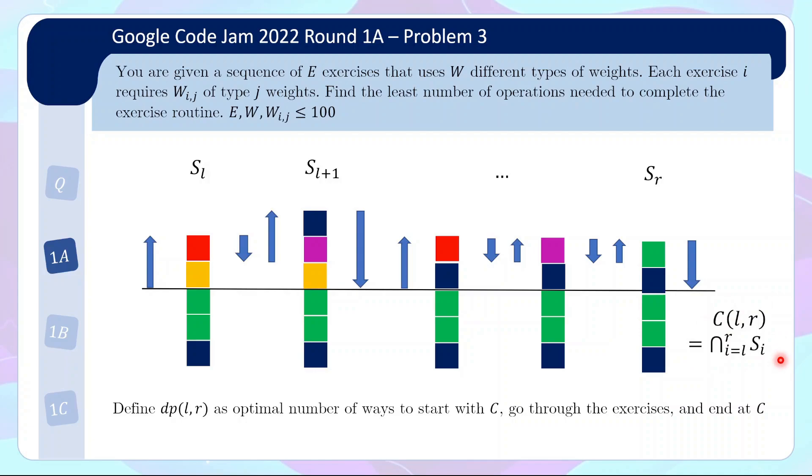Now the next part is actually the tricky part is about finding the right DP value to define so that we can solve this problem in an efficient way and it turns out that the right DP value to define is not the value required by the question but rather is the optimal number of operations where we start from C go through the exercises and end at C. So the difference is the DP is defined relative to starting at C and ending at C. So that's why there's now these two blue arrows added here and the DP value is the sum of all the blue arrows.